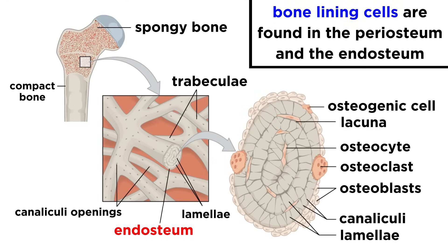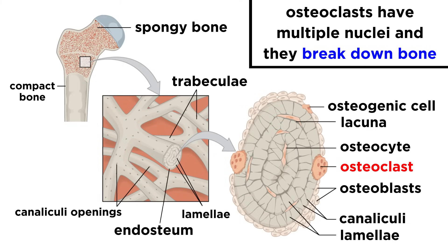Next are bone lining cells, which are flat cells found on the surface of the bone. These also help maintain the matrix. And lastly, osteoclasts. These are large cells with multiple nuclei that use enzymes to break down bone, which is a normal process called resorption that releases minerals to be transferred to the blood.